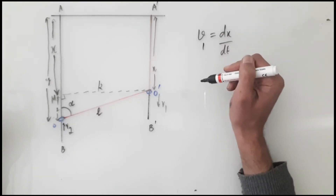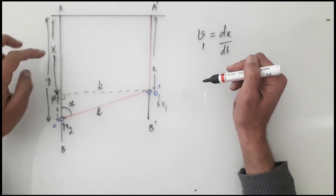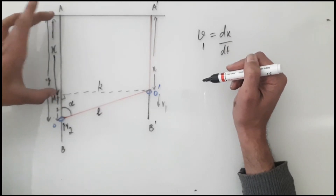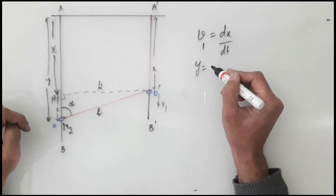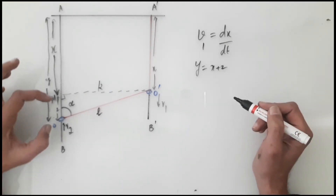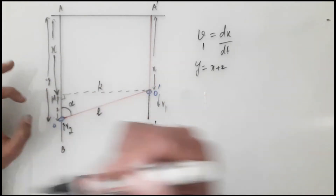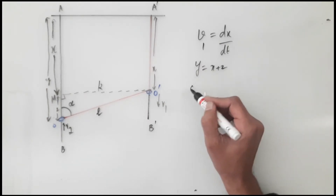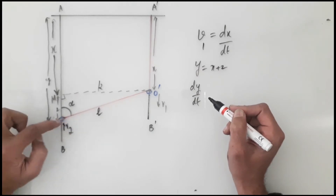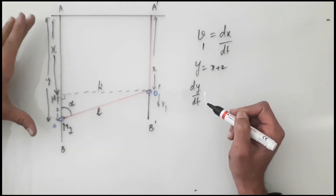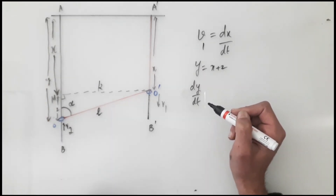Let's assume the distance from A to O as y, which is a sum of this distance plus this distance. This distance can be called z, so y is basically x plus z — the distance from O to the foot of the perpendicular dropped from here. If you just differentiate this equation, dy/dt should give you the speed. However, y is decreasing with time because, as per the constraint, this ring moves up.